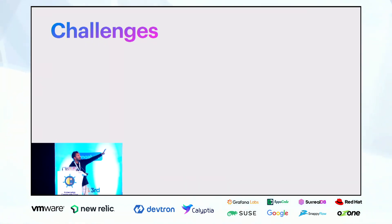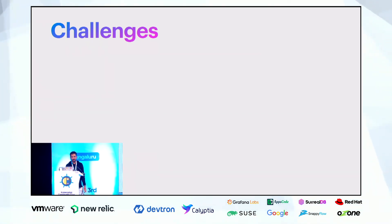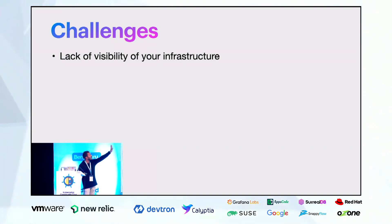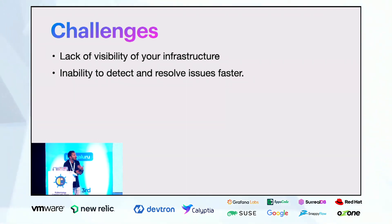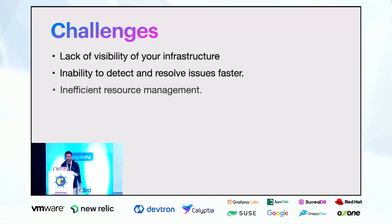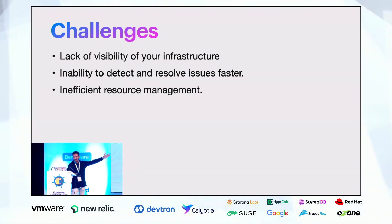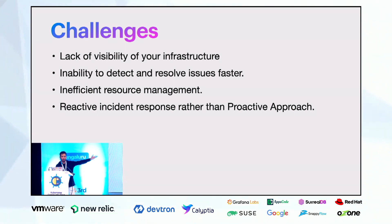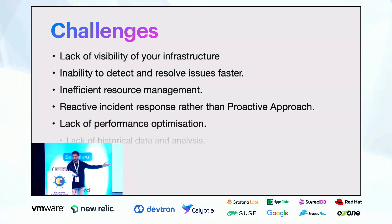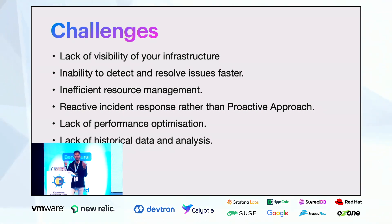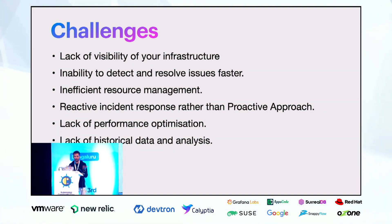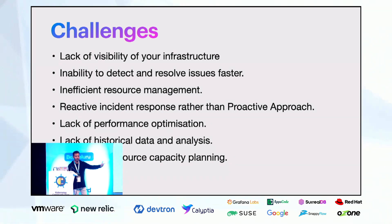The challenges faced by Suraj, Savitri, and everyone without observability include: lack of visibility on infrastructure, inability to detect and resolve issues faster, inefficient resource management, reactive rather than proactive incident response, lack of performance optimization, lack of historical data analysis — you don't know how much CPU or memory is being consumed — and difficulty in resource capacity planning for the future.